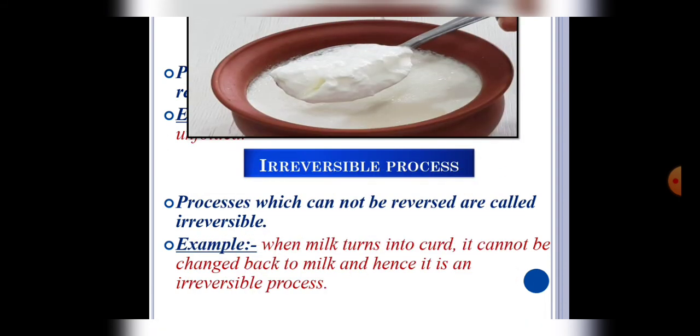For example, curd which is a conversion form of milk. But we cannot get back milk from curd, which shows that it is a permanent change.